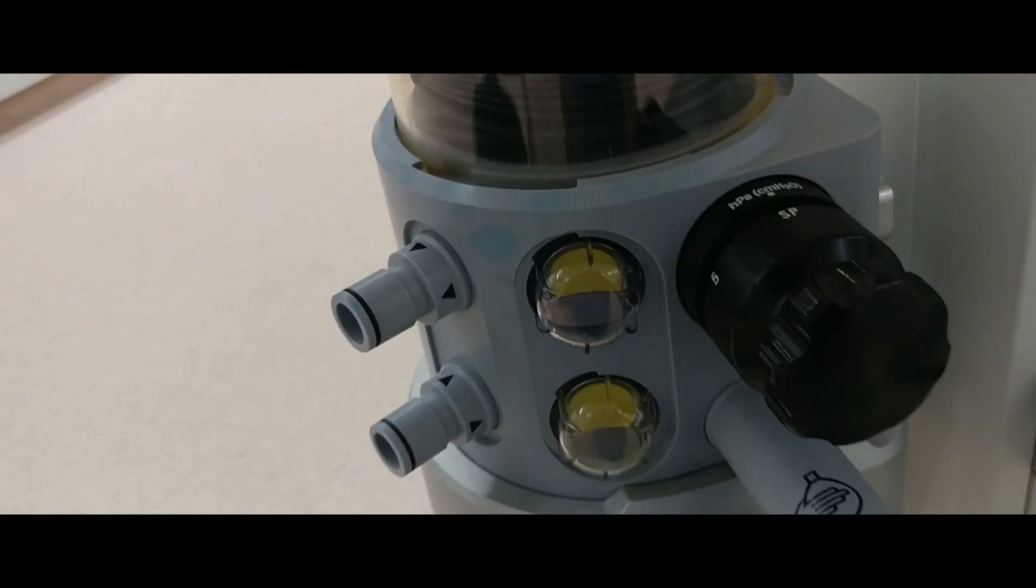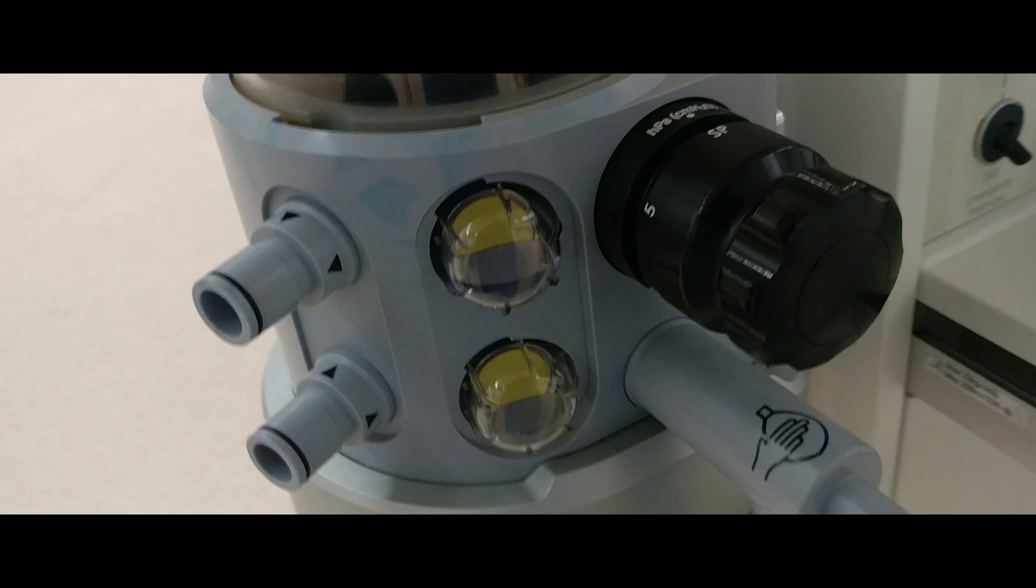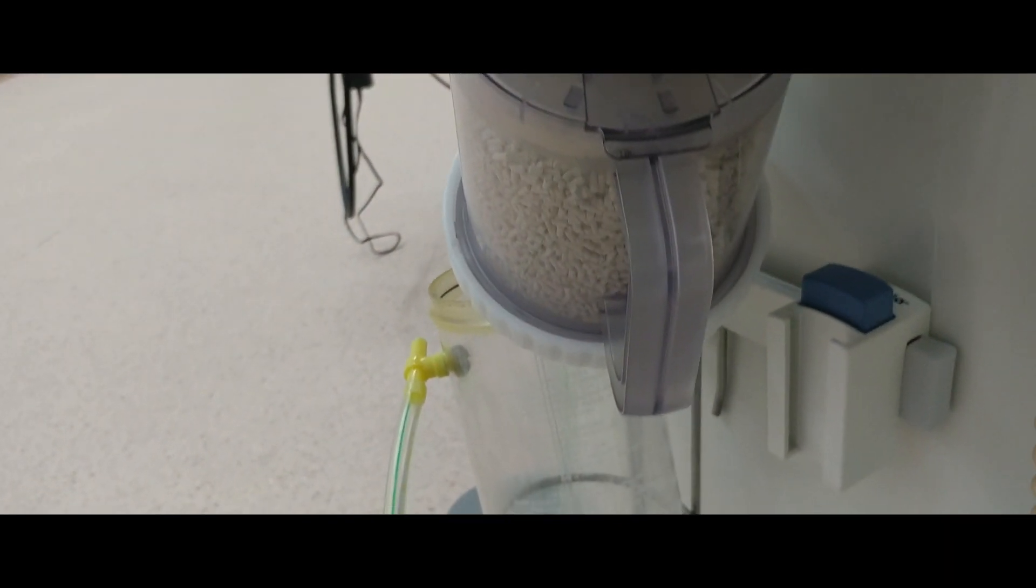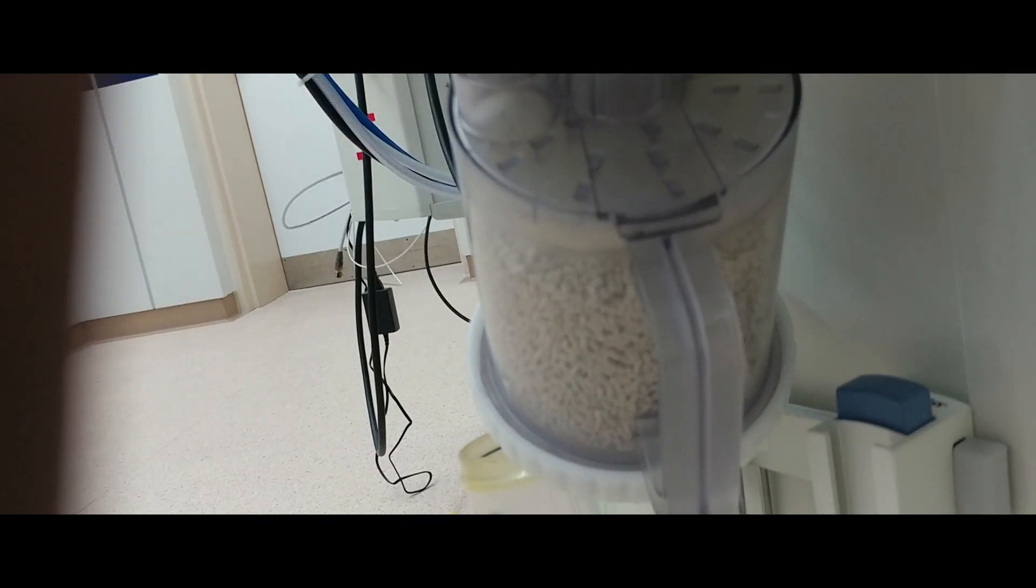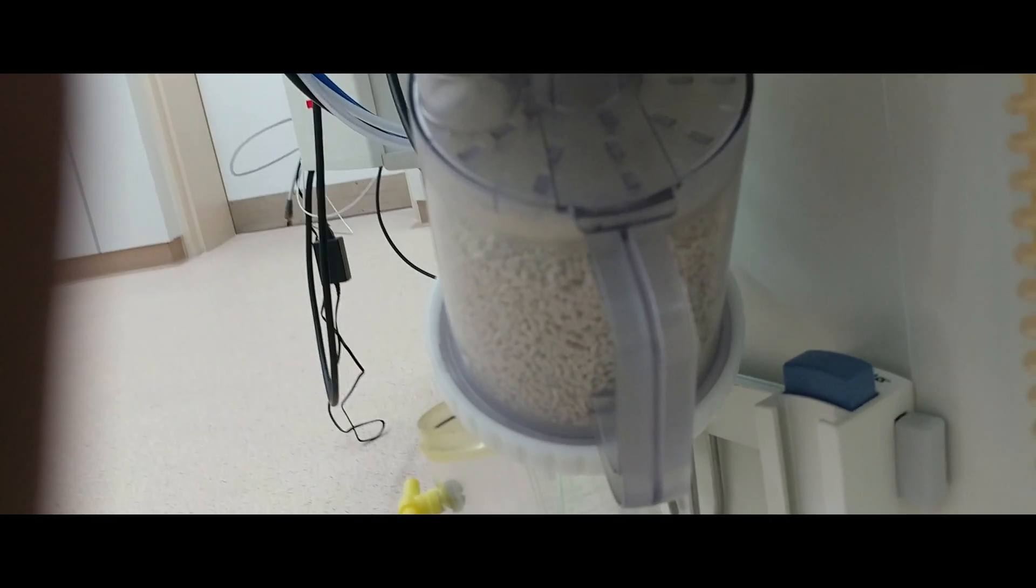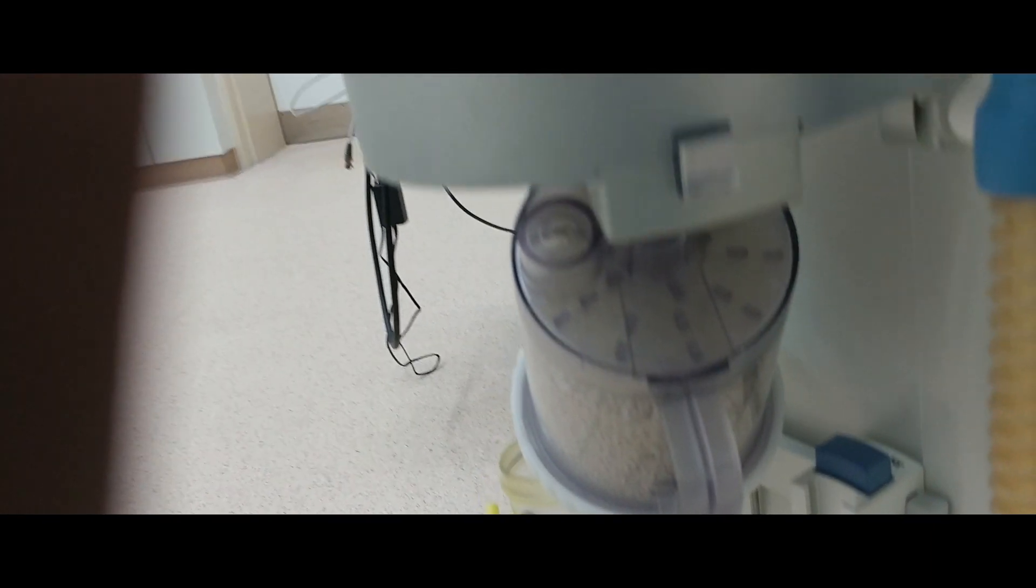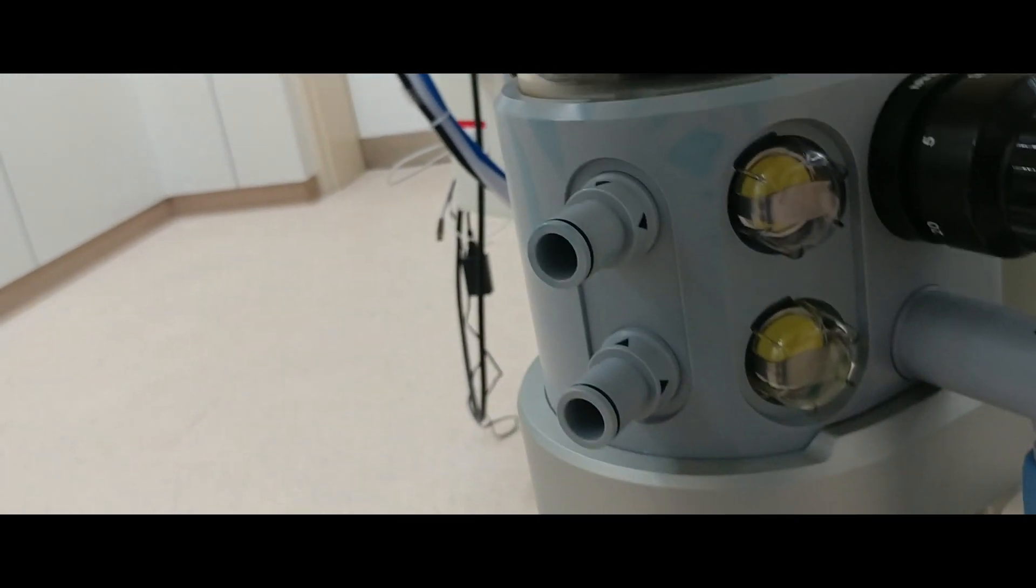At a pressure above the opening pressure of the valve, a controlled leak of gas is allowed from the system, which enables control of the patient's airway pressure. The minimum pressure required to open the valve is 1 cm H2O. A safety mechanism exists to prevent pressure from exceeding 60 cm H2O.